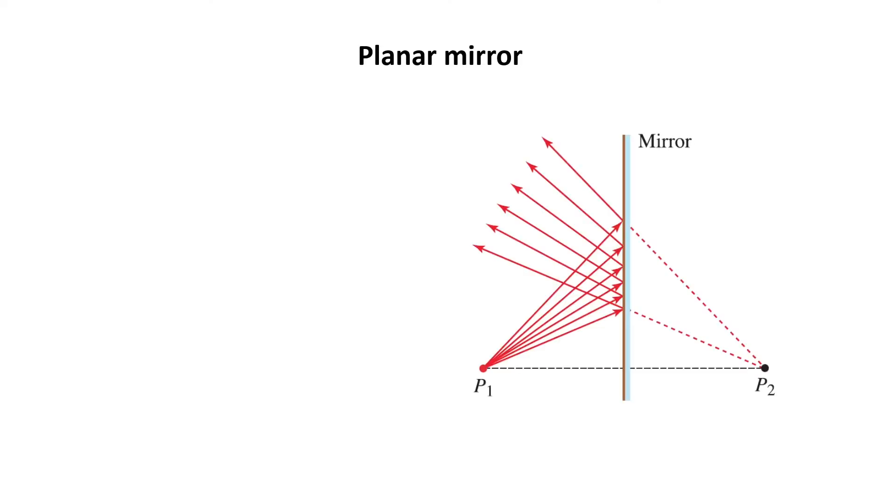The simplest mirror is a planar mirror. It reflects the rays coming from a point P1, as you see in this figure.